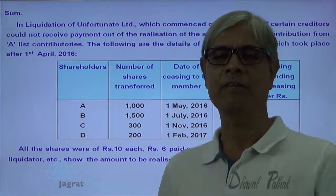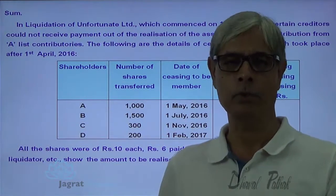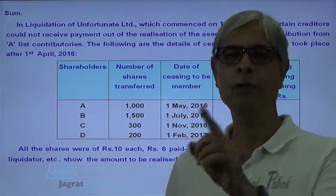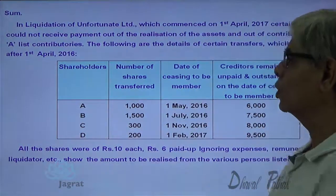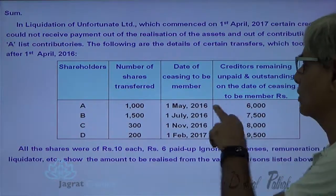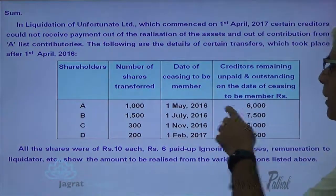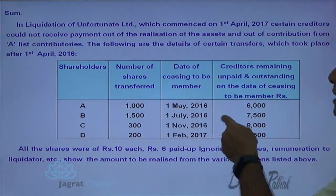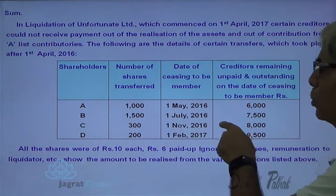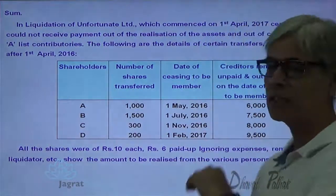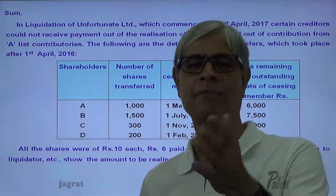List B contributories are required to contribute for the unpaid capital if that unpaid capital is not paid by List A contributory. But they are obliged to pay subject to the liability that existed on the date of transfer. So when A transferred the shares on 1st of May 2016, the liability existing in the books of the company was 6,000 — so he has to contribute for 6,000. Whatever liability increased after 1st of May 2016, that is 7,500 minus 6,000 equals 1,500, A cannot be asked to contribute for that increase in liability after shares were transferred by him.